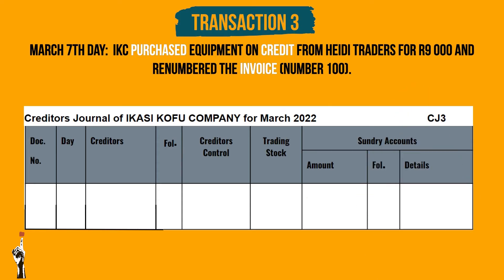The document number will be 100. The day is the 7th. The creditor's name is Heidi Traders. The 9,000 Rand should be recorded in the creditors control column, and in the sundry accounts as it is equipment and there is no separate column for equipment.